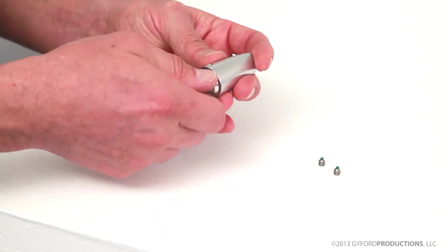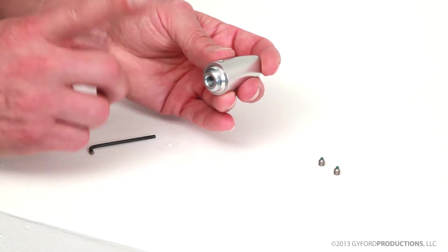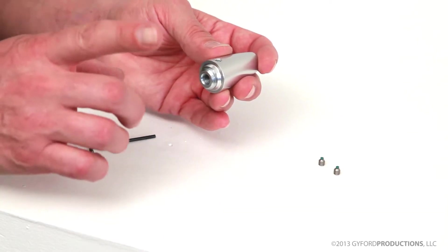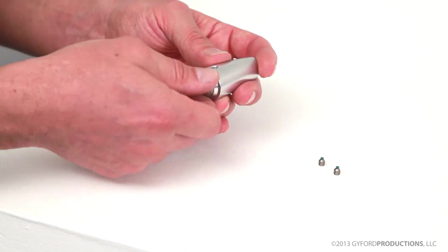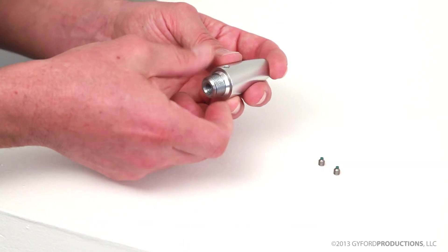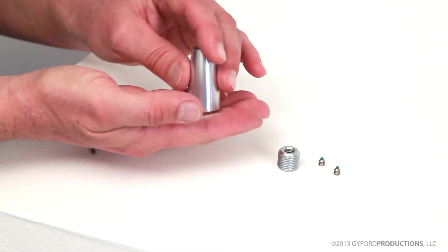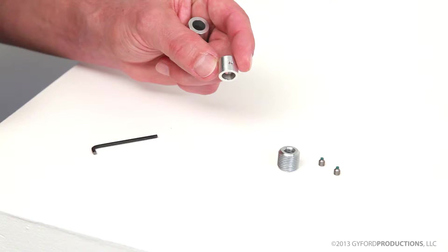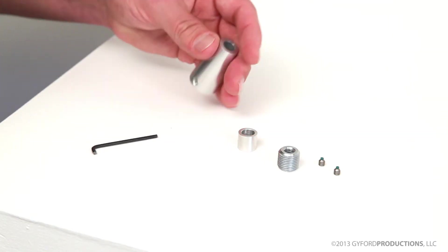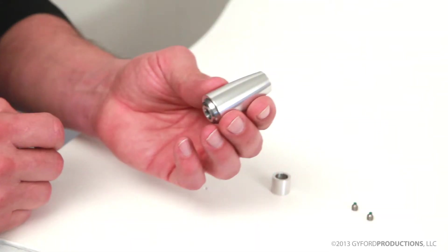Now we'll want to remove the turnbuckle mount. Sometimes this can stick and I'll show you a tip for that in just a moment. And inside there will be the parts for assembly.